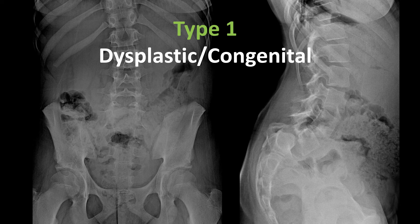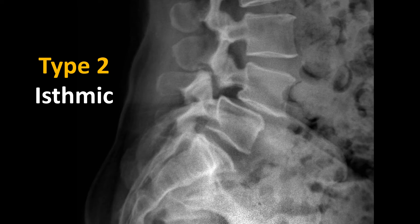Here you can see L5 in relation to the sacrum. The underlying abnormalities posteriorly — failure of development posteriorly — lead to a very severe spondylolisthesis. A type 2 anterolisthesis is one of the more common types and occurs due to an alteration of the pars interarticularis, typically a stress fracture.